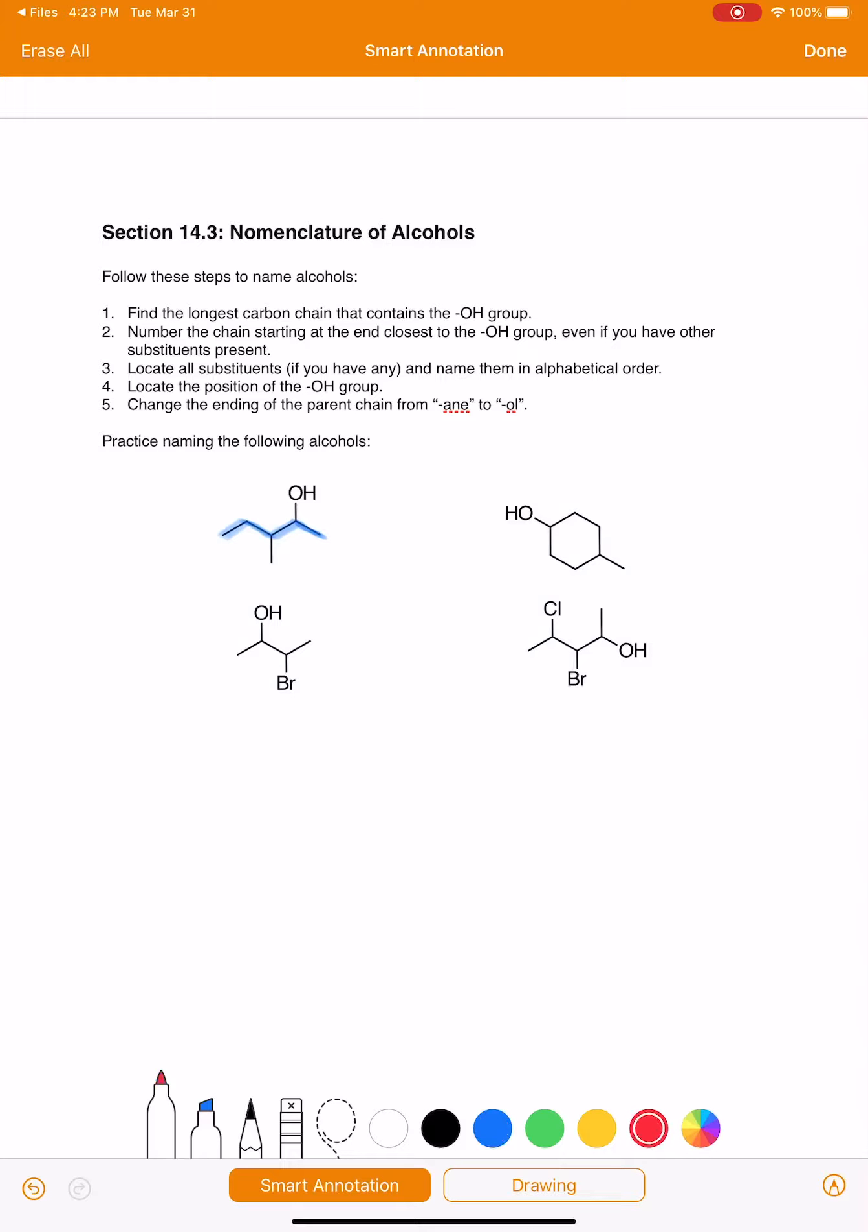We want to number starting at the end closest to the OH group. It doesn't matter if we have other substituents present, we still start numbering at the end closest to the OH group. Locate our other substituents. On this molecule, we have a substituent on carbon number three. That's a one carbon substituent, so its name is methyl.